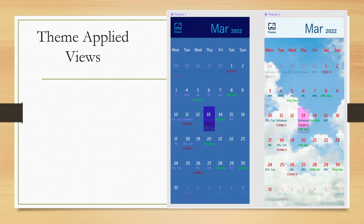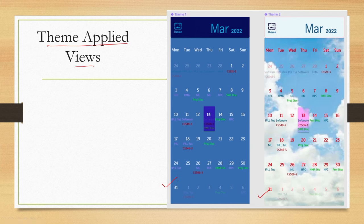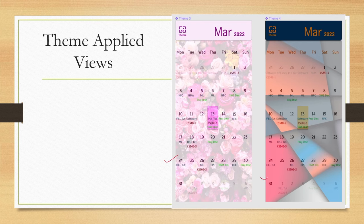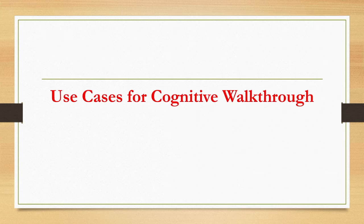Once a theme is selected, we get the theme-applied view. If we selected a cloud theme it looks one way; if dark mode, another. Similarly, floral and geometric themes are applied on the background of the interface. That covers how the prototype looks and how the functional hierarchy is implemented.